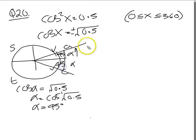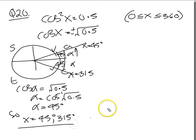So this first one would be 45, this one would be 360 minus 45, so you've got 45 and 315 degrees. The other one we'll take the negative now, cos x equals negative square root 0.5.